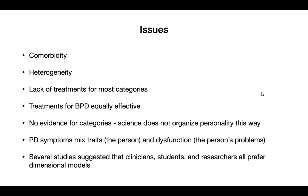Another problem the alternative model tried to solve is that the symptoms of the DSM mix dysfunction with traits. They mix questions about what kind of person this is — is this a shy person, a mistrustful person — with specific kinds of dysfunction like does this person hurt themselves or have problematic drinking. These two things are really important to be able to distinguish. The alternative model took a first attempt at doing that, although the field has sort of concluded it wasn't successful at the first pass.